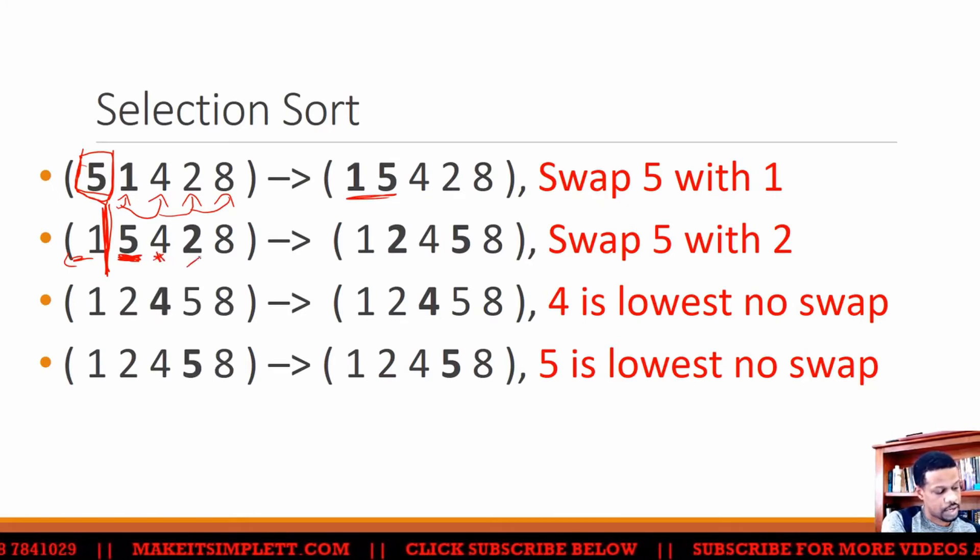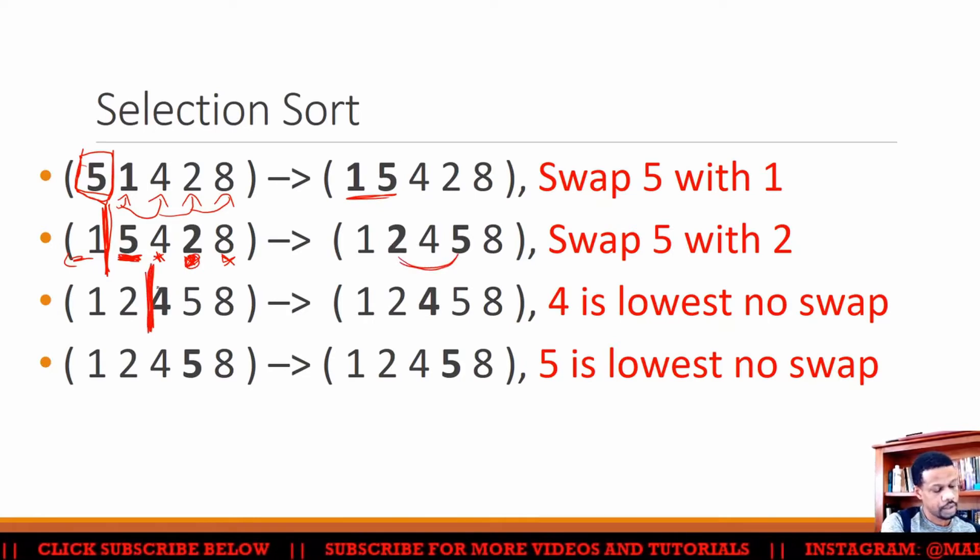And then wait, I have something that's smaller than the 4. Let me keep track of the 2. The next thing is 8, alright cool. So the smallest one I have is the 2, so I'm going to swap the 5 with the 2. Then I'm going to lock off that side here.